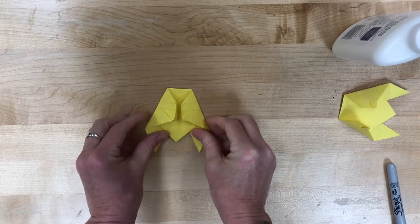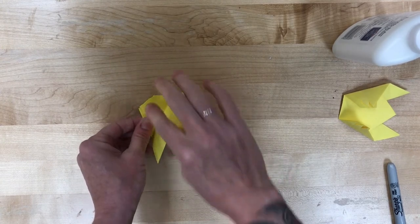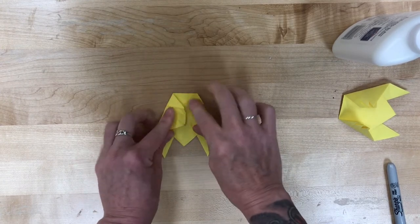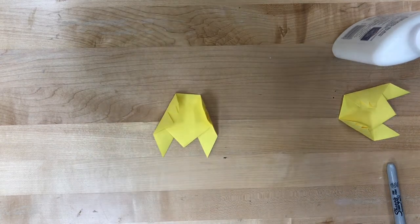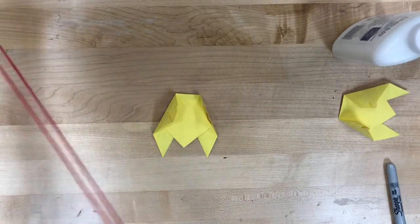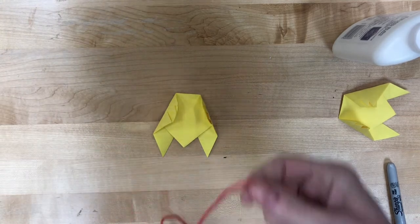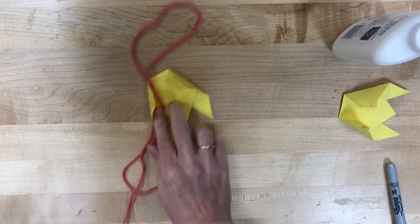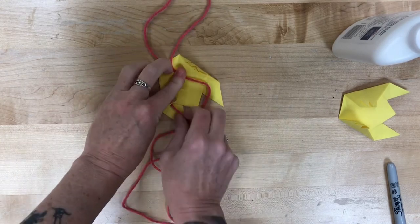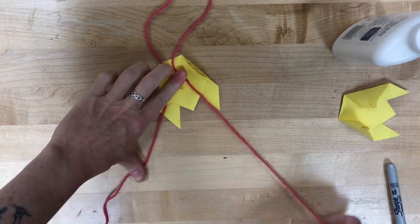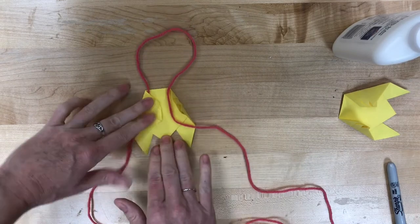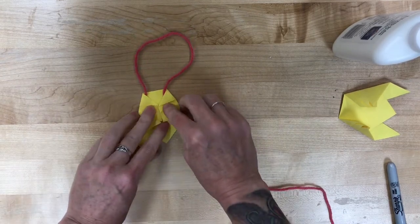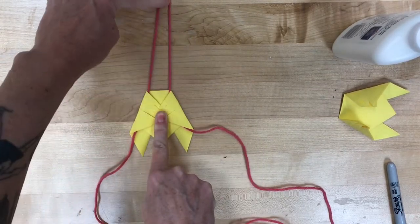Then I'm gonna go ahead and bring out that string. Where is my string? There we go. You're gonna fold your string in half. The part that's looped is gonna go near the top of your creation. One leg of string will go under one side, and one leg of string will go under the other side.